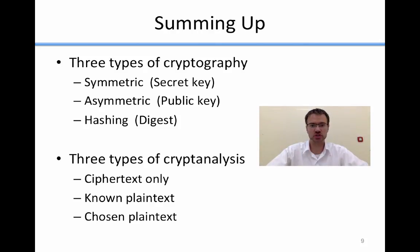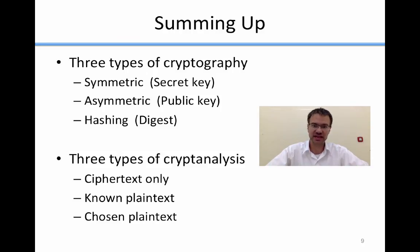To sum up this brief introduction: there are three types of cryptography in modern cryptography — symmetric or secret key cryptography, asymmetric or public key cryptography, and hashing or digest. There are three types of cryptanalysis — ciphertext only, known plaintext, and chosen plaintext. We're going to talk about all of this in more detail in the coming weeks and in activities in class, but I just wanted to introduce you to the concepts now.